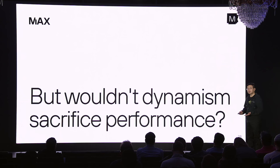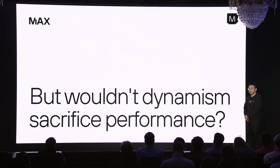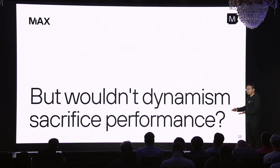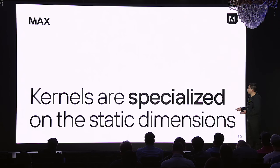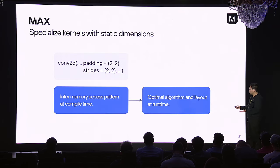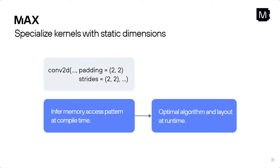Now about kernels. Abdul just mentioned that Max has dynamism support, but you may be wondering — wouldn't that hurt performance? If things are only known at runtime, how would you optimize them? Well, in Max we let the kernels use as much information as possible. For example, we can specialize the kernels on their static dimensions. For a convolution kernel, typically the padding and stride are already known — they are known constants — which means we can infer the memory access pattern at compile time.